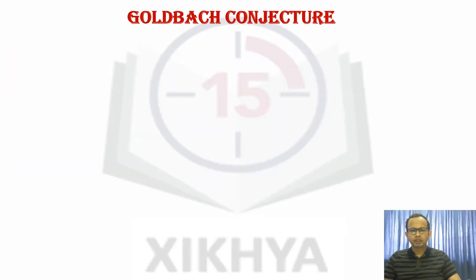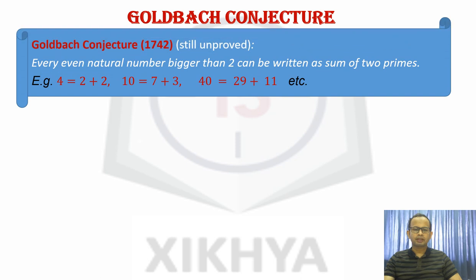So there are many interesting conjectures concerning prime numbers. What is a conjecture? It's a mathematical statement which is expected to be true, but which has not been proved yet. One such example is Goldbach conjecture. So what does this conjecture say? It says that every even natural number bigger than 2 can be written as sum of 2 primes. For example, 4 is 2 plus 2, 10 is 7 plus 3, 40 is 29 plus 11, etc.